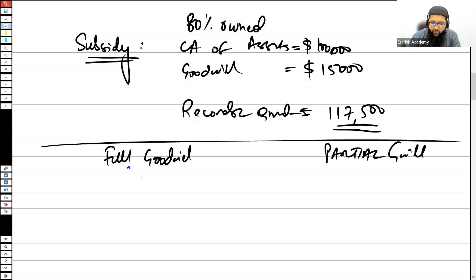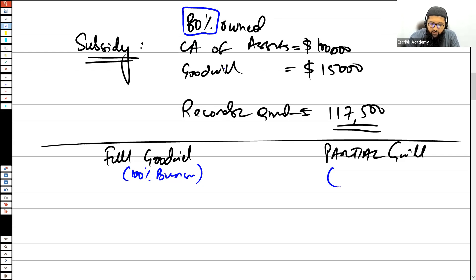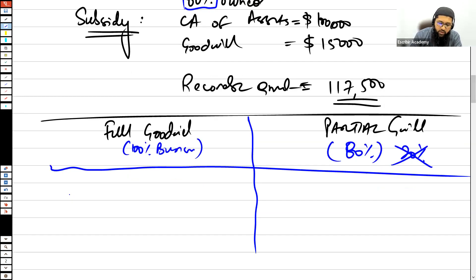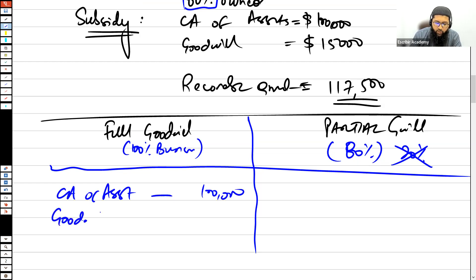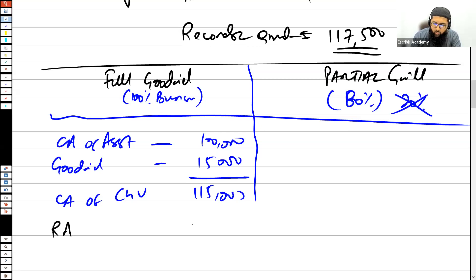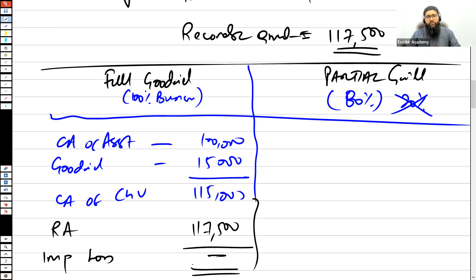Full goodwill means it represents 100% of the business. Under full goodwill, the carrying amount of net assets is $100,000 and goodwill is $15,000, giving a total carrying amount of $115,000. The recoverable amount is $117,500. Since the carrying amount is lower than the recoverable amount, the impairment loss is zero — no impairment has arisen.